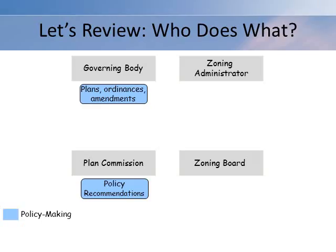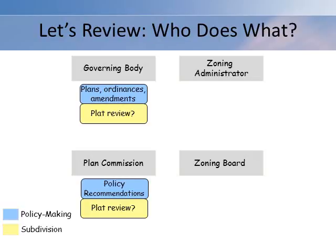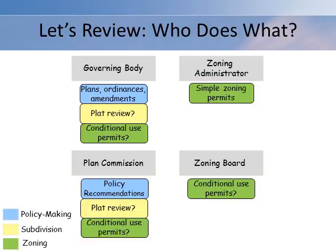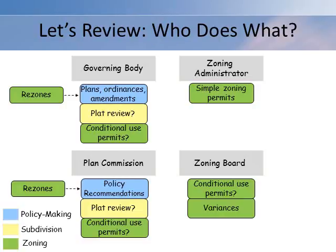Let's review who does what. Policymaking is the responsibility of the governing body; they are responsible for adopting and amending plans and ordinances, typically in consultation with the plan commission. Land division and subdivision plats are reviewed by the plan commission; preliminary and final plat approval may also be assigned to the plan commission or reserved for the governing body. Zoning responsibilities are distributed among all four bodies. The zoning administrator is responsible for granting simple zoning and land use permits. Conditional use permits are assigned to one of three bodies as specified in the local zoning ordinance: the governing body, plan commission, or zoning board. Variances are always decided by the zoning board. Rezones, which are simply amendments to the zoning ordinance, are decided by the governing body with input from the plan commission.